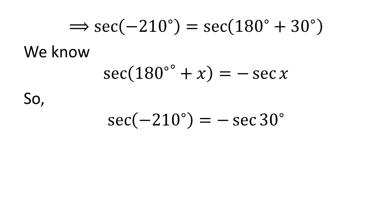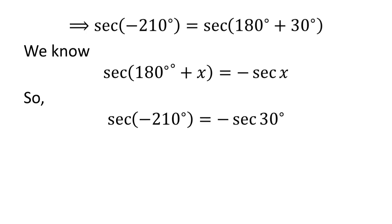Let us apply the above identity for secant of minus 210 degrees. Here x is 30 degrees. So secant of minus 210 degrees is equal to minus secant of 30 degrees.